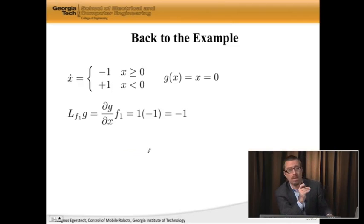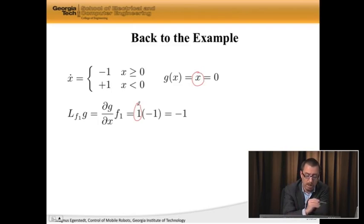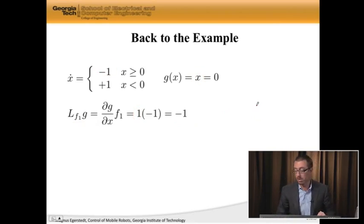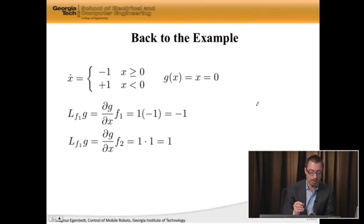So Lf1g is, it's the derivative of g with respect to x. So the derivative of that with respect to x is simply 1. f1 is simply negative 1. So the derivative is negative 1, which is one of the things we needed for Zeno. We needed, or for sliding, we needed this to be negative for type 1 Zeno to occur. That's the first. Well, let's do the same for f2. Sorry, this is an f2 right there. Apologize about that.